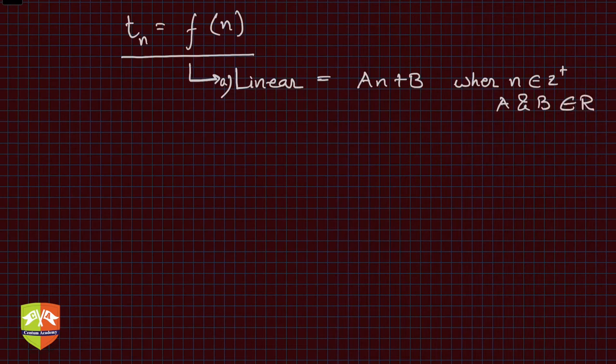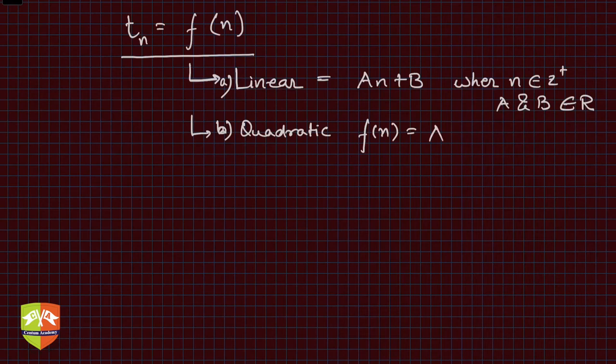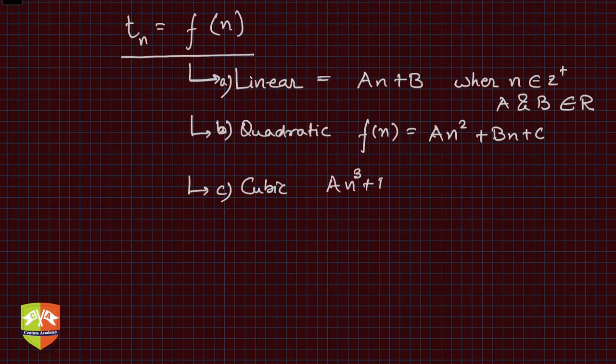Another could be quadratic form where fn could be an² + bn + c. Then there's cubic, where it could be an³ + bn² + cn + d, and so on. All a, b, c, d are real numbers, so you could have infinite such sequences.